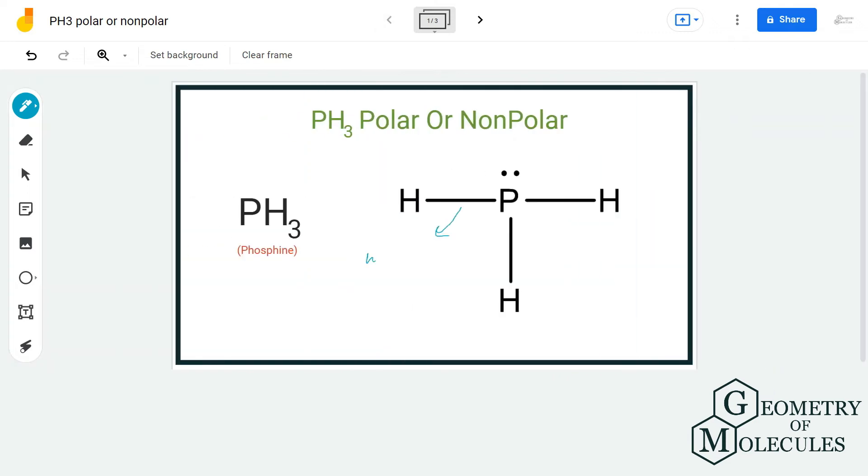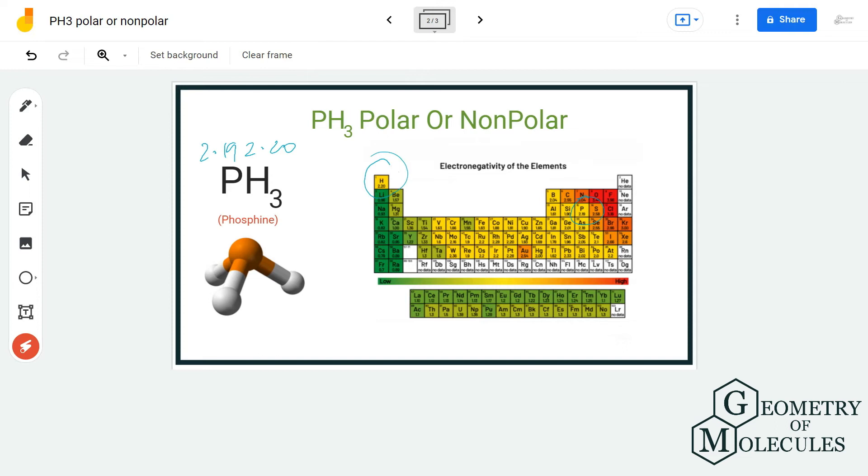Although these bonds are non-polar, let's not assume that it is a non-polar molecule because of the presence of lone pairs on the phosphorus atom. Generally, the molecules that have a central atom with lone pairs have chances that this molecule might be a polar one.